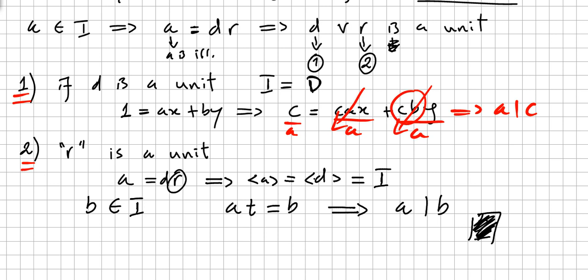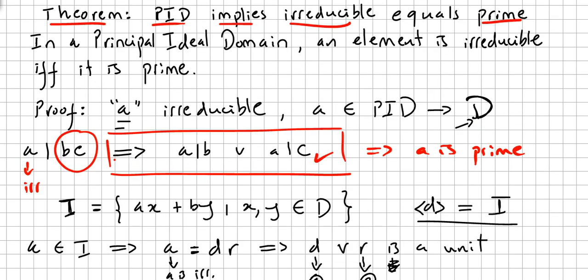So in both cases — if d is a unit, A divides C; if r is a unit, A divides B. So in both cases, if A divides BC and A is irreducible, it implies that A divides B or A divides C. This means A is prime, and the theorem is proved: in a principal ideal domain, an element is irreducible if and only if it is prime. For the converse direction, please check the previous video.